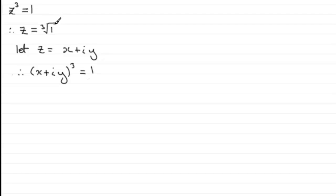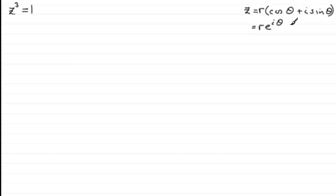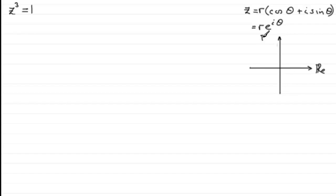If we take a complex number z and write it in mod-arg form — r(cos θ + i sin θ) — or in exponential form, r·e^(iθ), now suppose I represent the real number 1 on an Argand diagram. Drawing the real axis and the imaginary axis, the real number 1 would be represented as a vector pointing to 1 on the real axis.